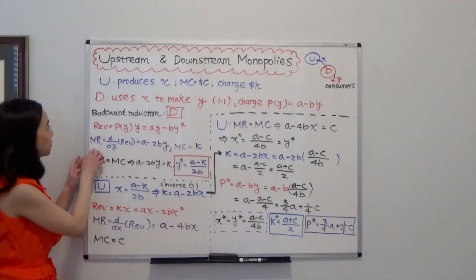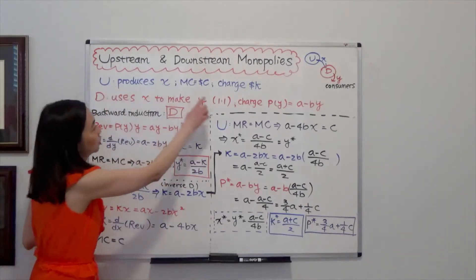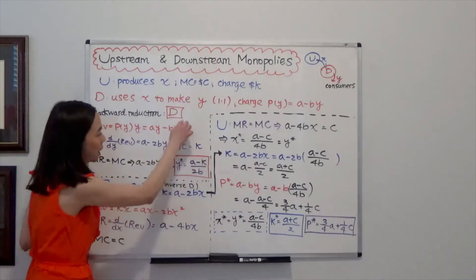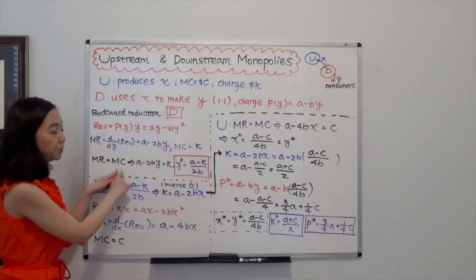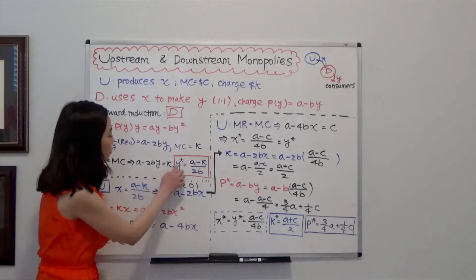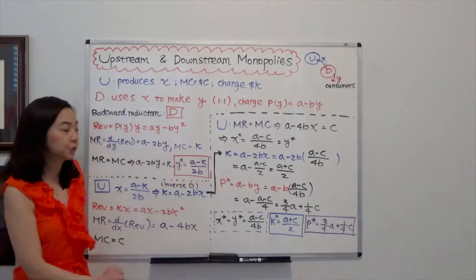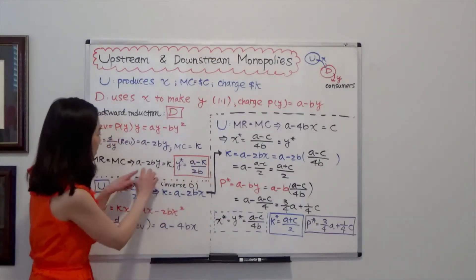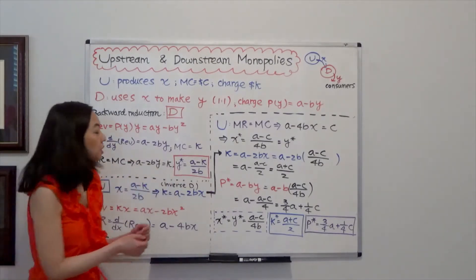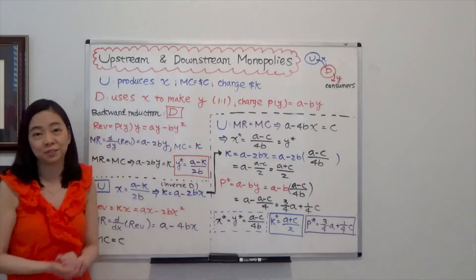Now what is the marginal cost of Company D? Well, marginal cost is exactly equal to K because Company U charges K dollars for each unit that they produce. So setting marginal revenue equal to marginal cost, A minus 2BY is equal to K. So you can solve for Y star — that's the optimal quantity for Company D. Y star is equal to (A minus K) over 2B. So Company D is going to say: you give me a price of your input X, K dollars, and that is the quantity I'm going to produce.